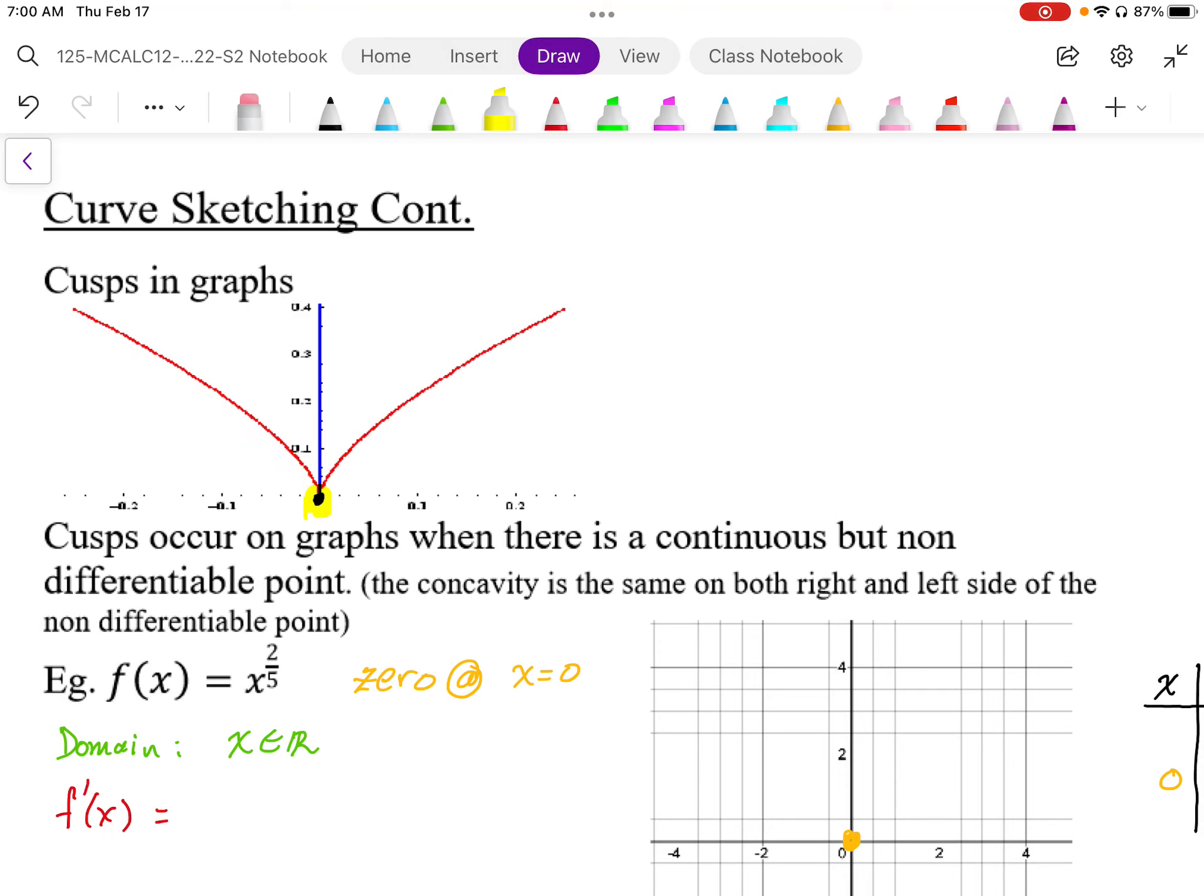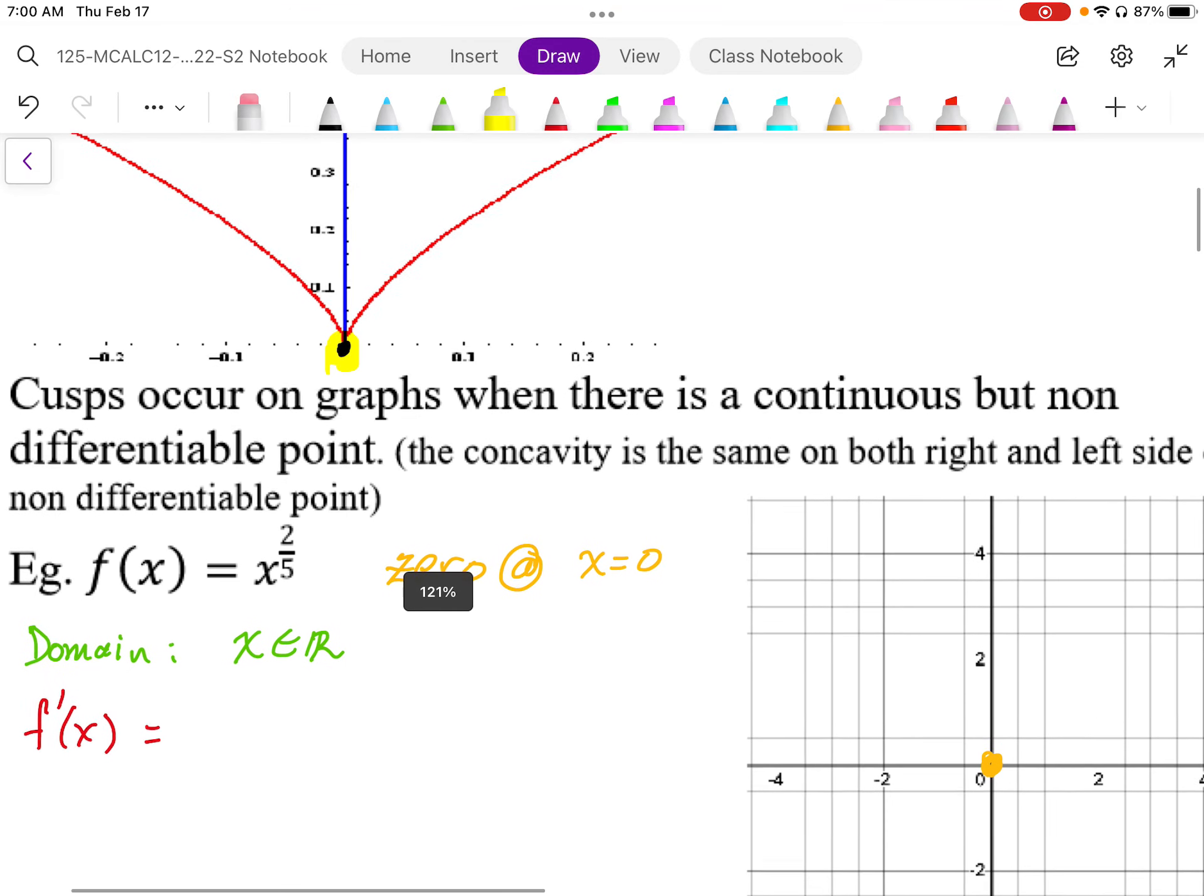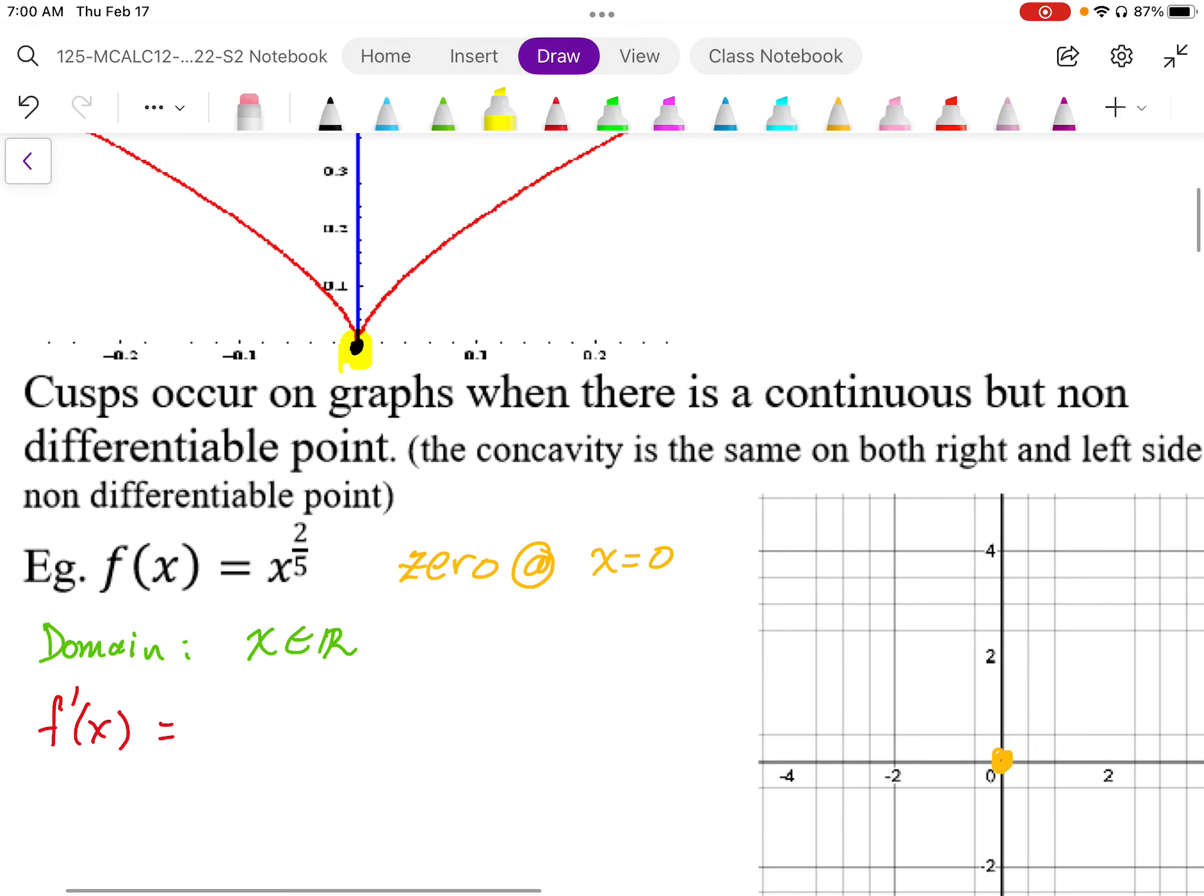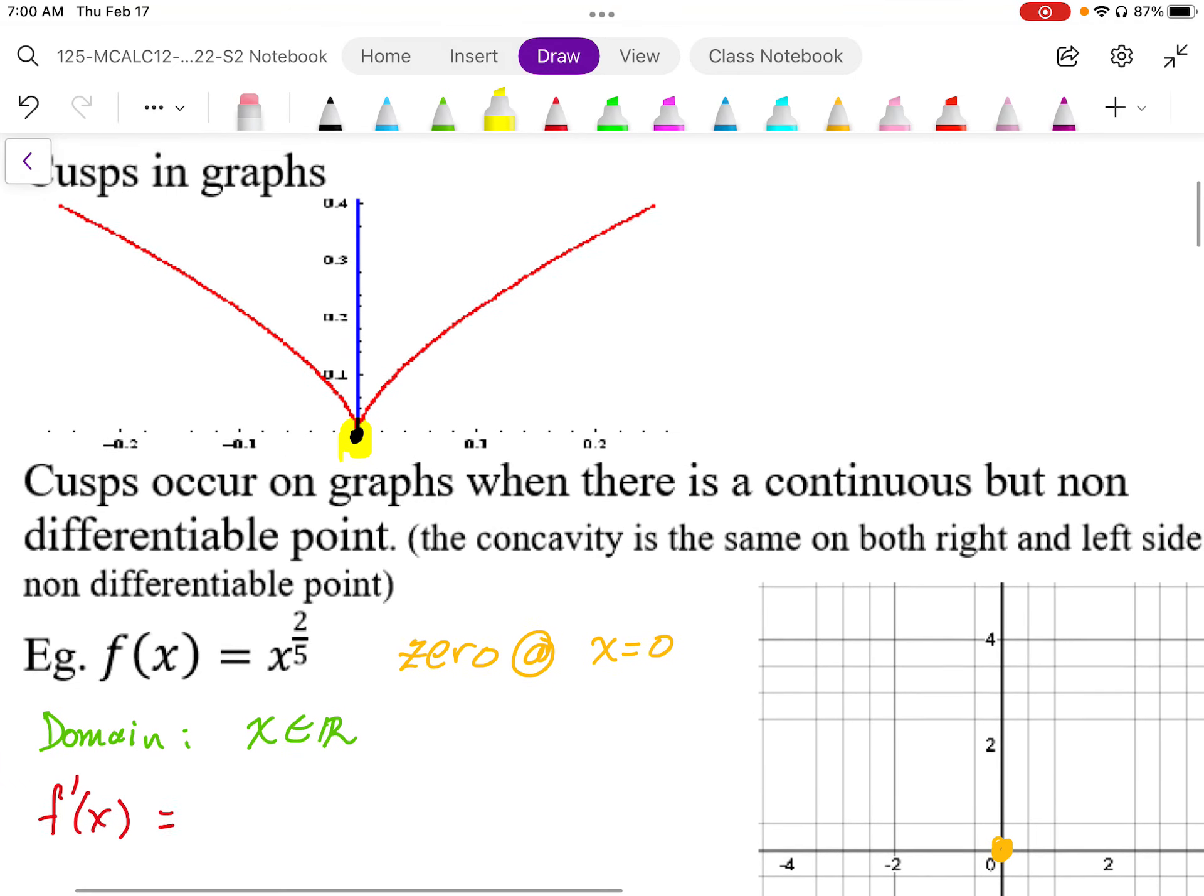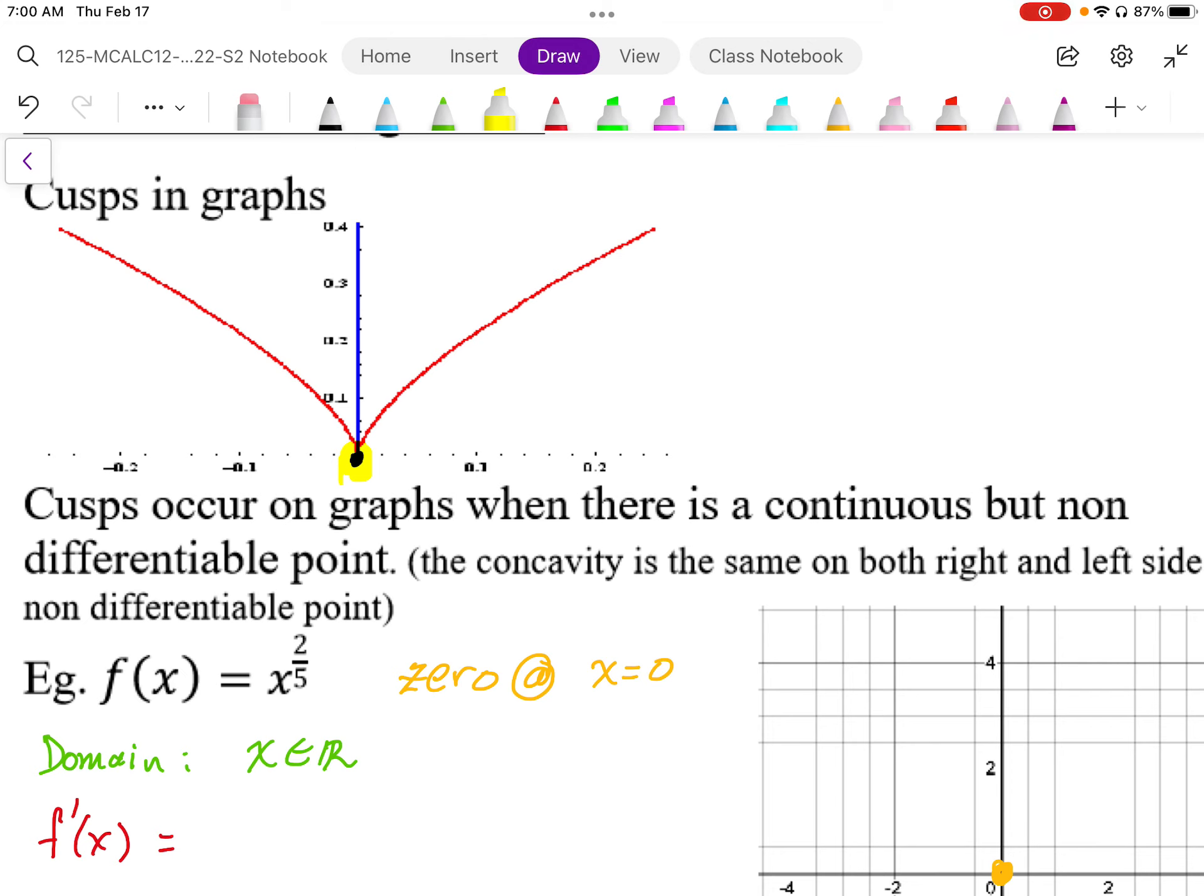Looking at this graph here, this is x to the power 2 over 5. Now this will generate a cusp. The root generates this kind of curve. And because it's squared in the numerator of that power, we have an even function, so it's going to go to both sides.